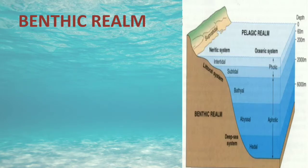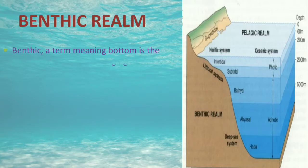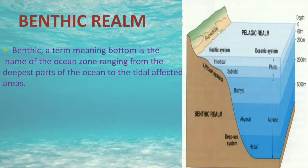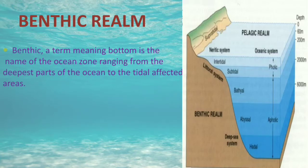In part one we studied the pelagic realm, and in this part we will cover the benthic realm. Benthic is a term meaning bottom — it is the name of the ocean zone ranging from the deepest part of the ocean to the tidal-affected areas. As we can see in the diagram, the brown-colored portion represents the benthic realm, which ranges from the deepest part of the ocean to the tidal-affected area.